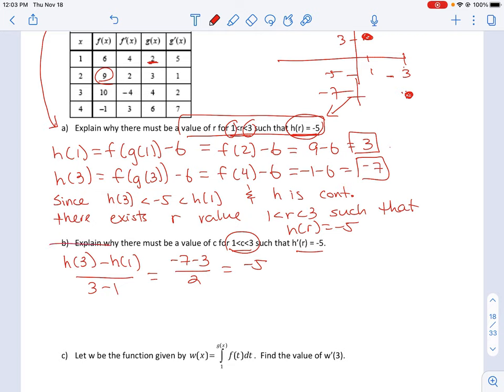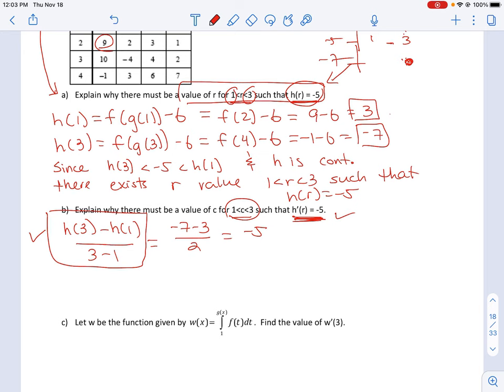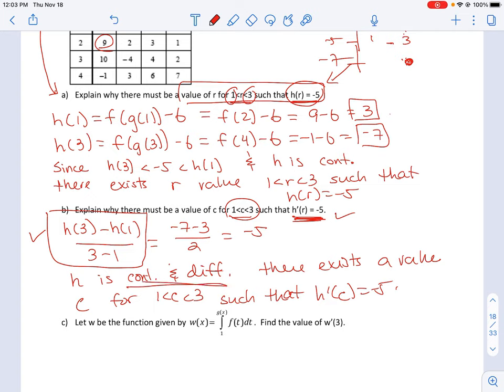Notice what we calculated here is the average rate of change. What they're asking us to show is the instantaneous rate of change. But remember the mean value theorem says that if you have a function that is continuous and differentiable, there exists a value c between this interval such that h'(c) equals negative 5. This is the key: it's only because this function is continuous and differentiable that the average rate of change equals the instantaneous rate of change at some moment in time.